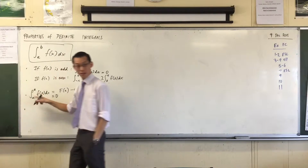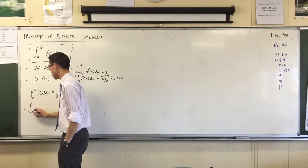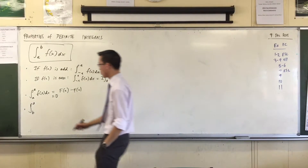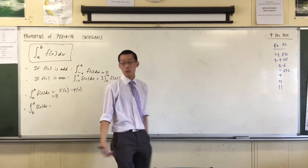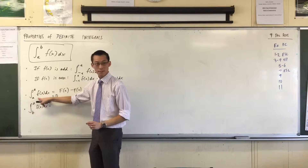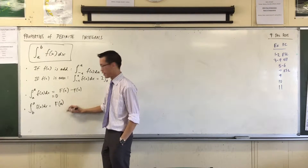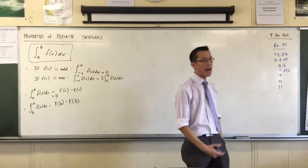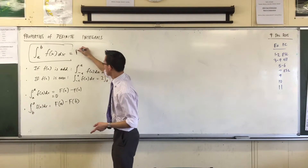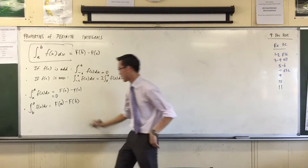Another property: rather than going from a small value a to a big value b, suppose you go in reverse — from b to a. If we evaluate the primitive, you evaluate at the upper bound first then the lower bound. This gives you F(a) minus F(b), which is exactly the negative of the normal integral from a to b.